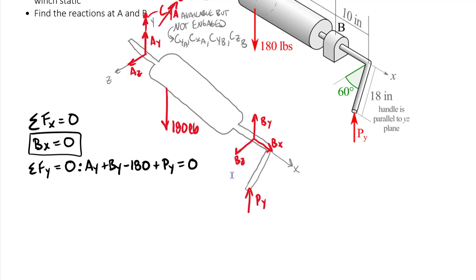Sum of forces in z: Az plus Bz equals zero. Now, don't look at this equation and say both must be zero — any equal and opposite values for Az and Bz would also sum to zero. So it might be zero, but we don't know that yet. We have three equations remaining — our moment equations. Our options are summing moments about each axis or summing all moments about one single point.